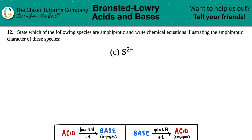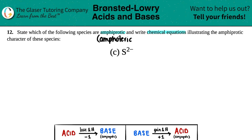Number 12: state which of the following species are amphiprotic and write chemical equations illustrating the amphiprotic character of these species. Letter C is S²⁻. Now, just know that amphiprotic and amphoteric are the same thing — your teacher or professor might use either word, but they both mean the same thing: a species can act as an acid and a base depending on the situation.